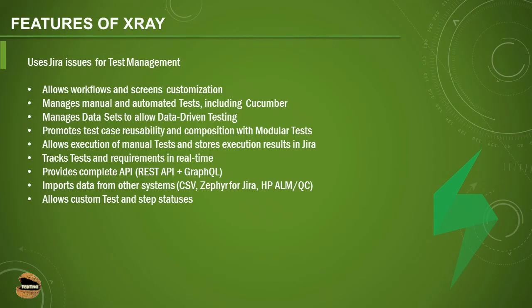X-Ray allows execution of manual tests and stores execution results in Jira itself — no external support needed. It tracks tests and requirements in real time, so you can see status updates showing how far a requirement has been covered and the status of associated tests. It provides a complete API including REST API and GraphQL. It can also import data from other systems such as CSV files or competitors like Zephyr, or even ALM/QC tools. You can also customize test and step statuses to meet your team's or organization's expectations.